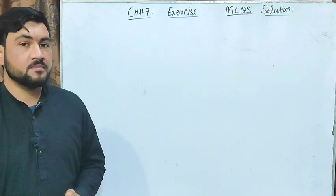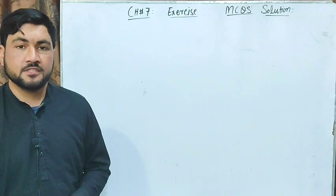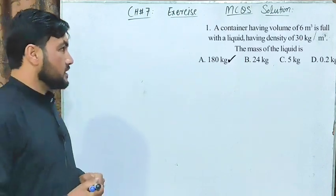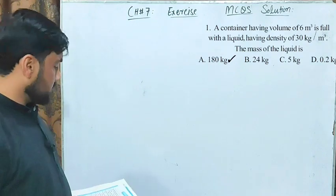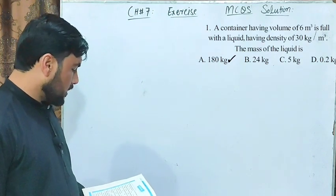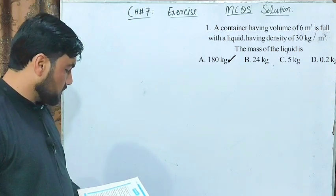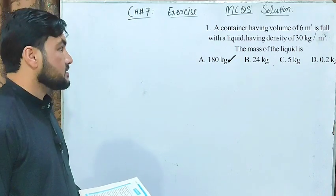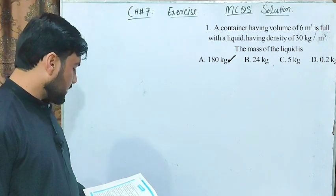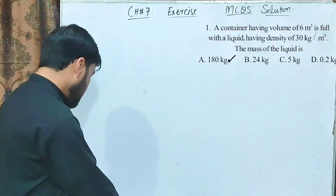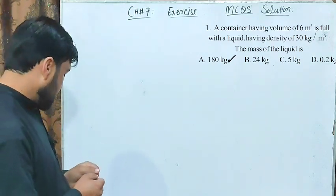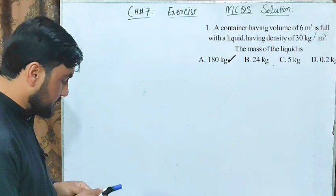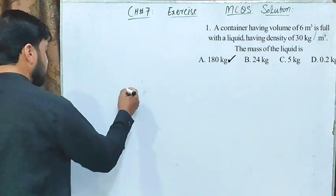Dear students, let's solve Chapter 7 Class 9 Physics MCQs one by one. The statement says: a container having a volume of 6 meter cube is full with a liquid having density of 30 kilogram per meter cube. The mass of the liquid is — let's find out. The options are given.